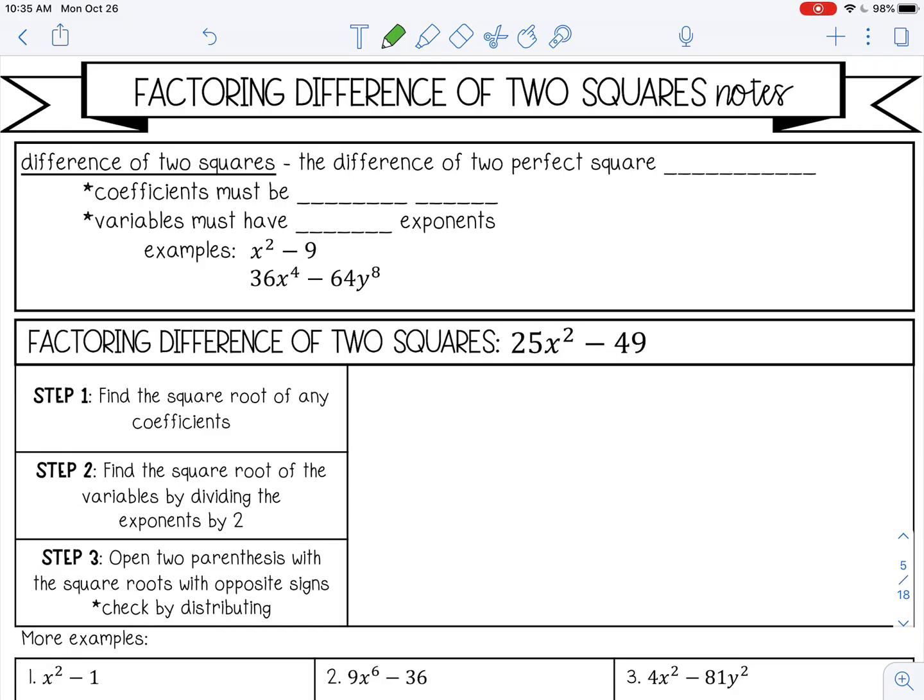Welcome to this lesson on factoring difference of two squares. Difference of two squares is the difference of two perfect square monomials, and what that means is the coefficients must be perfect squares.